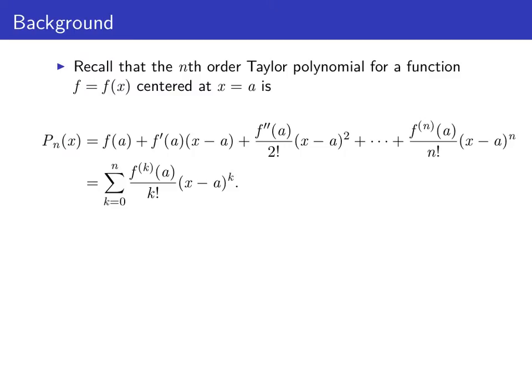The nth order Taylor polynomial for a function f centered at x equals a is given by this expression. Notice the difference between the Taylor polynomial centered at a and the one centered at zero: when we center at a, we're looking at a polynomial in terms of powers of x minus a. When a is zero, we get powers of x, but here we get powers of x minus a — that's an important distinction to make.